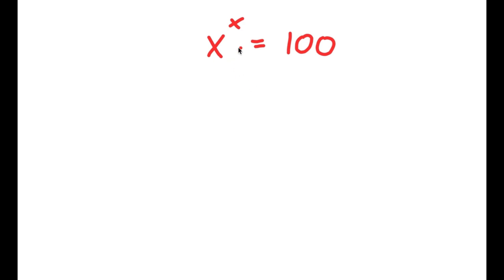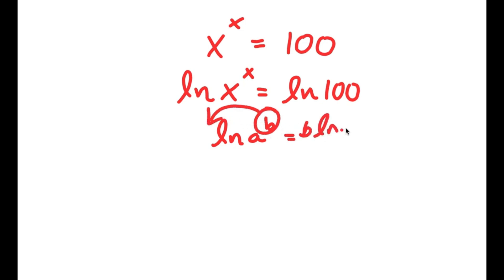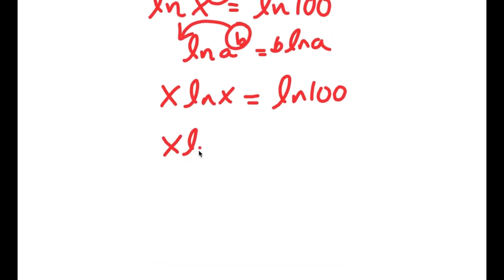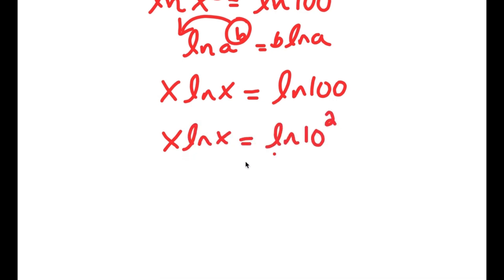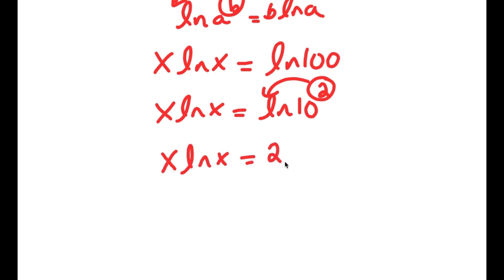In this problem, I have x to the power of x is equal to 100. I'm going to start by taking the natural log on both sides, so I have ln of x to the power of x equals ln of 100. Now, if I have ln of a to the power of b, I can move b to the front, so this equals b times ln a. So for ln of x to the power of x, I move x to the front and get x times ln x equals ln 100. Now ln 100 is the same as ln of 10 squared, so I can move 2 to the front and get x times ln x equals 2 times ln 10.